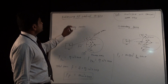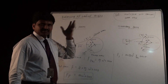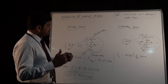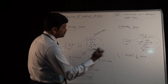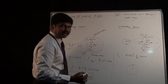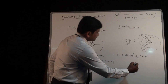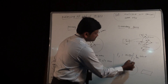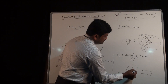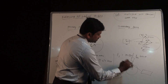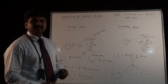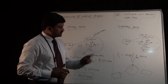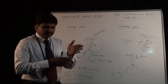Let us understand the balancing of radial engines. Radial engines are balanced by the direct and reverse crank method. In a radial engine, cylinders are placed radially around a common crankshaft — for example, one cylinder here, one here, and one here. The connecting rod of each cylinder connects to this common crankshaft. In a radial engine, all the cylinders are placed in only one plane.